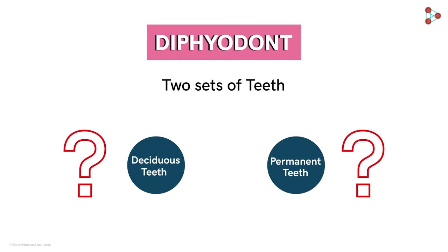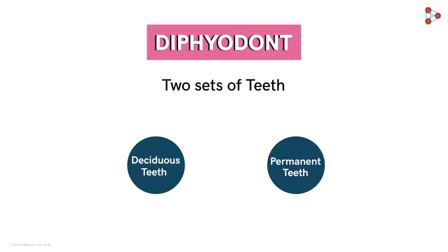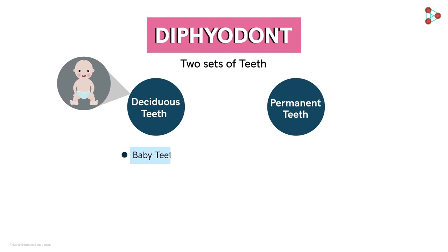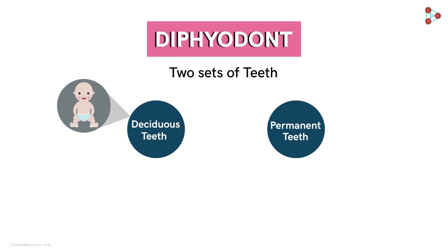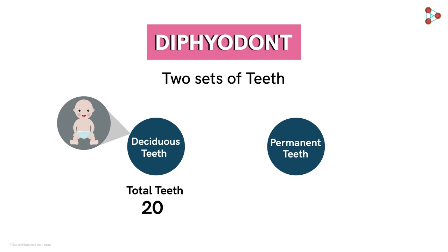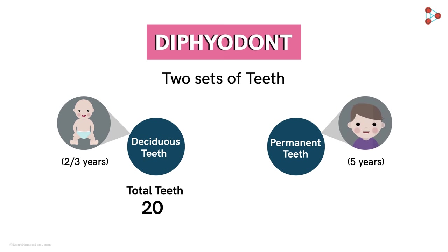A few months after birth, a set of teeth begin to appear in the baby. These teeth are called the baby teeth, or the milk teeth, or the primary, or even the deciduous teeth. After these teeth fall away, the next set of permanent teeth begin to appear. So the primary and then the permanent are the two sets of teeth in the life of humans, due to which we are called diphyodont. The milk teeth are usually 20 in number and the growth of the entire set is generally completed by the time a child is 2 or 3 years old. The next set of permanent teeth starts developing at around 5 years of age. The 20 milk teeth are later replaced by around 32 permanent teeth — yes, the 32 teeth that we usually talk about.